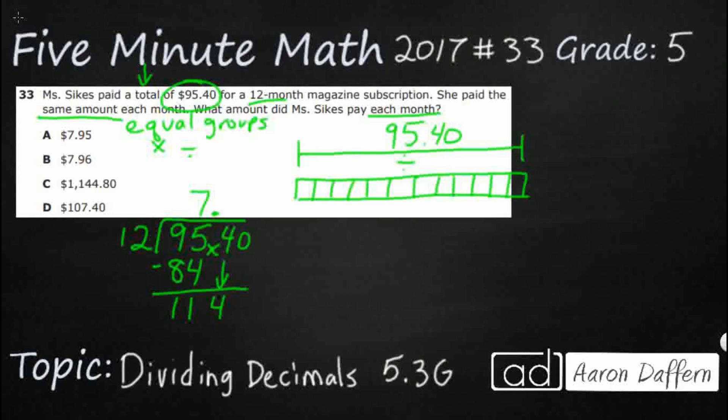So 12 into 114. Well, I know it can't be 10. So I'm going to guess 9. 9 times 12 is 108. And that's going to get us a remainder of 6. 60. So 12 goes into 60 five times. And if you don't know your 12s, then you can list them out on the side. 12 times 1, 12 times 2. But some of us know our 12s.